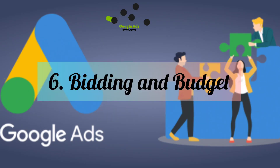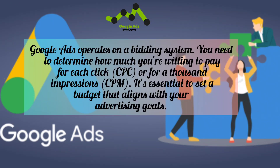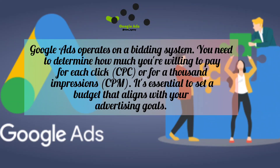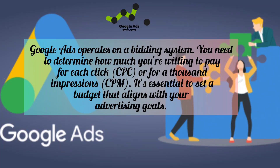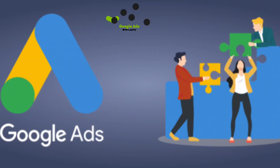Number six: Bidding and Budget. Google Ads operates on a bidding system. You need to determine how much you are willing to pay for each click or for a thousand impressions. It is essential to set a budget that aligns with your advertising goals.